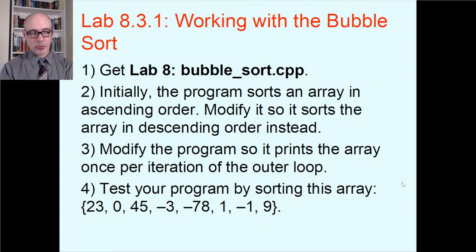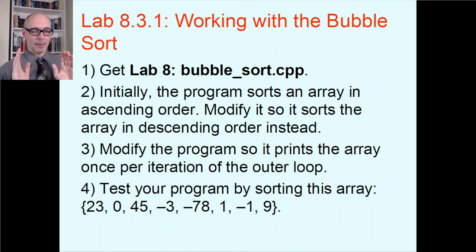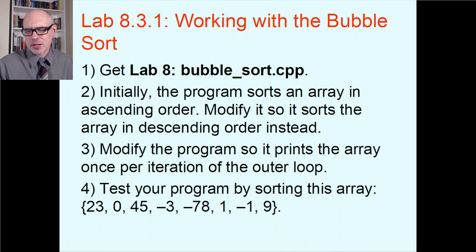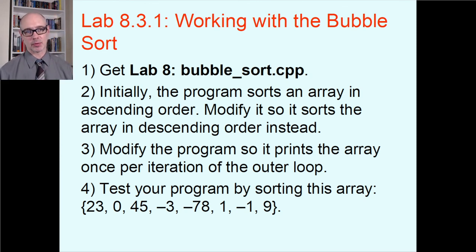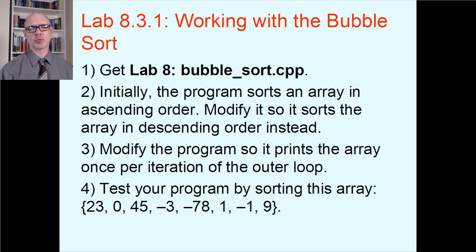If you're a student in my class and we were in person, next would be the lab working with bubble sort. This lab comes with a completely pre-made bubble sort that already works, set to sort the array in ascending order from small to large. Once you understand that, the goal of the lab would be to modify that code to sort in descending order instead — from biggest to smallest. We'd also modify the program so it prints out the array at the end of each outer loop iteration, basically recreating the hand trace table we just did.